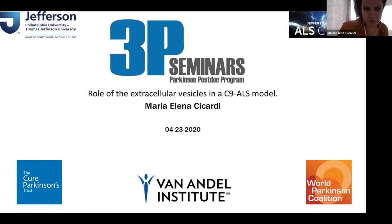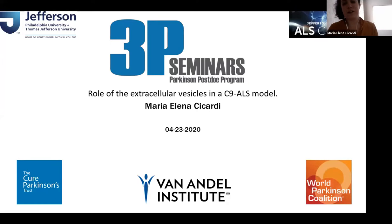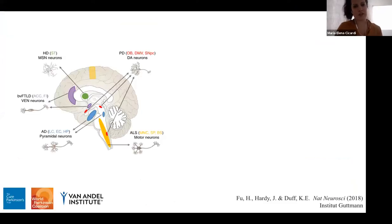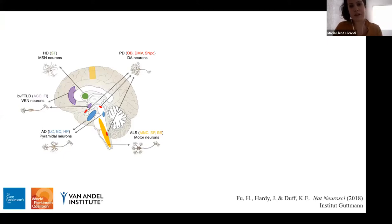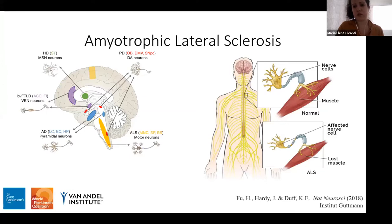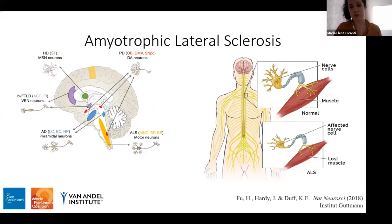Welcome everybody, thanks for participating and listening to my talk. As Lisa said, the title of my talk is 'The Role of Extracellular Vesicles in a C9 ALS Model.' As we all know, neurodegenerative diseases are a group of heterogeneous diseases all caused by the irreversible and progressive loss of particular subsets of neurons. ALS in particular is caused by the loss of motor neurons, the functional unit connecting the central nervous system with muscles. When patients are diagnosed with ALS, they start losing muscle strength and control of voluntary movement.